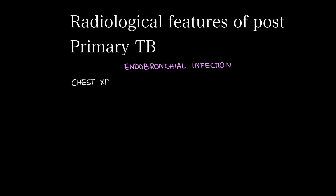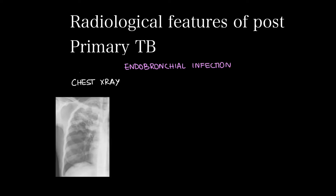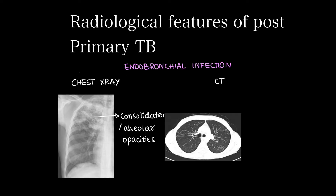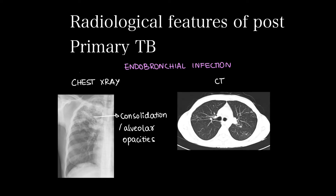The radiological features of post primary TB: the endobronchial infection appears on chest x-ray as consolidation or alveolar opacities, and on CT chest they appear as centrolobular nodules. The endobronchial infection shows upper lobe predominance.